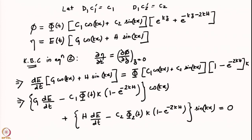Consequently, when we wrote down forms for phi and eta, we kept the time dependence arbitrary. We did not set them equal to e^(i·omega·t) as we have done until now. This is because the equations have a time-periodic coefficient, so e^(i·omega·t) is not going to work — you can substitute and see that.